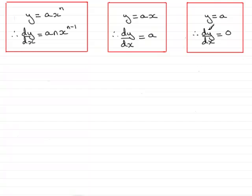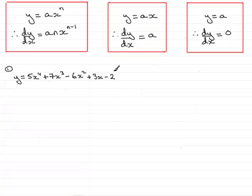Rather than waste time, let's get on with an example. Here's my first one: y equals 5x to the power 4 plus 7x cubed minus 6x squared plus 3x minus 2. We have a number of terms here which are of these forms, so I can differentiate this with respect to x.